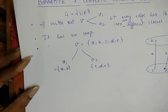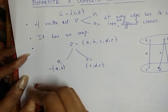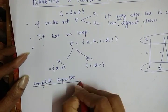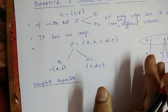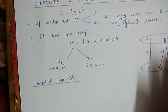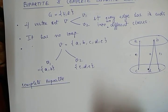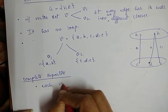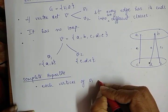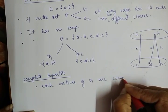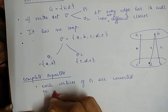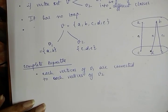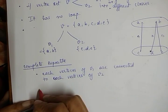In the case of a Complete Bipartite Graph, you need to know what 'complete' means — every vertex is connected to every other vertex. In a Complete Bipartite Graph, each vertex of V1 is connected to each vertex of V2. Then the graph is known as a Complete Bipartite Graph.